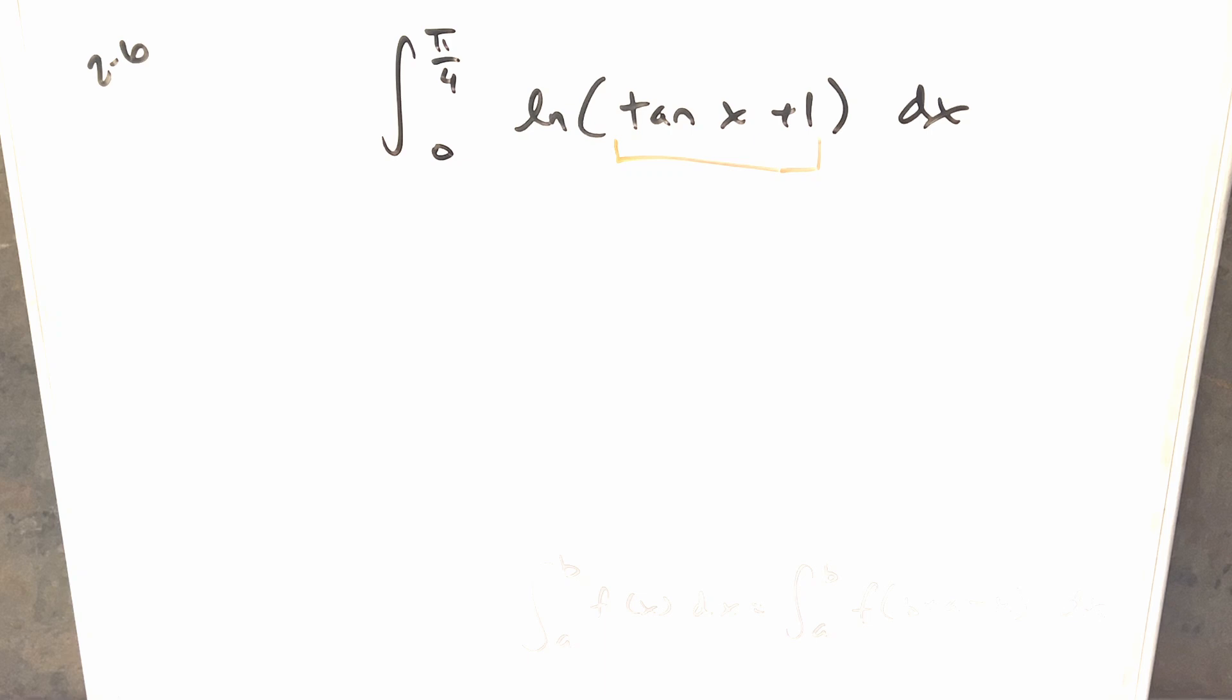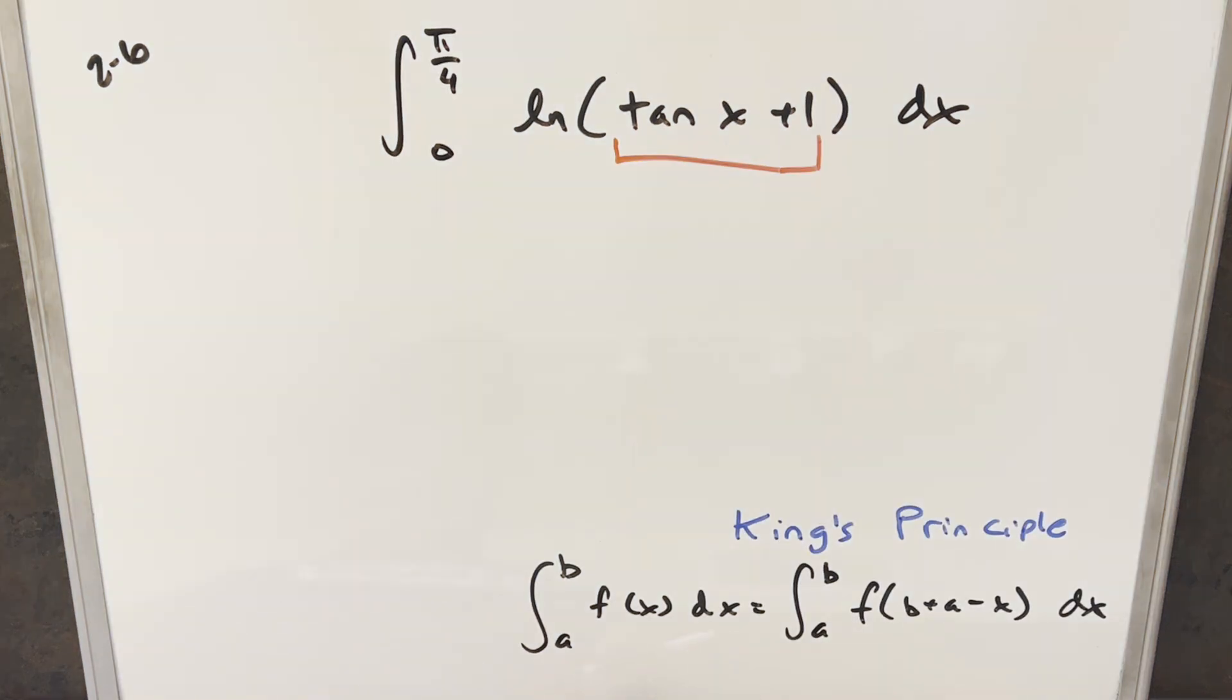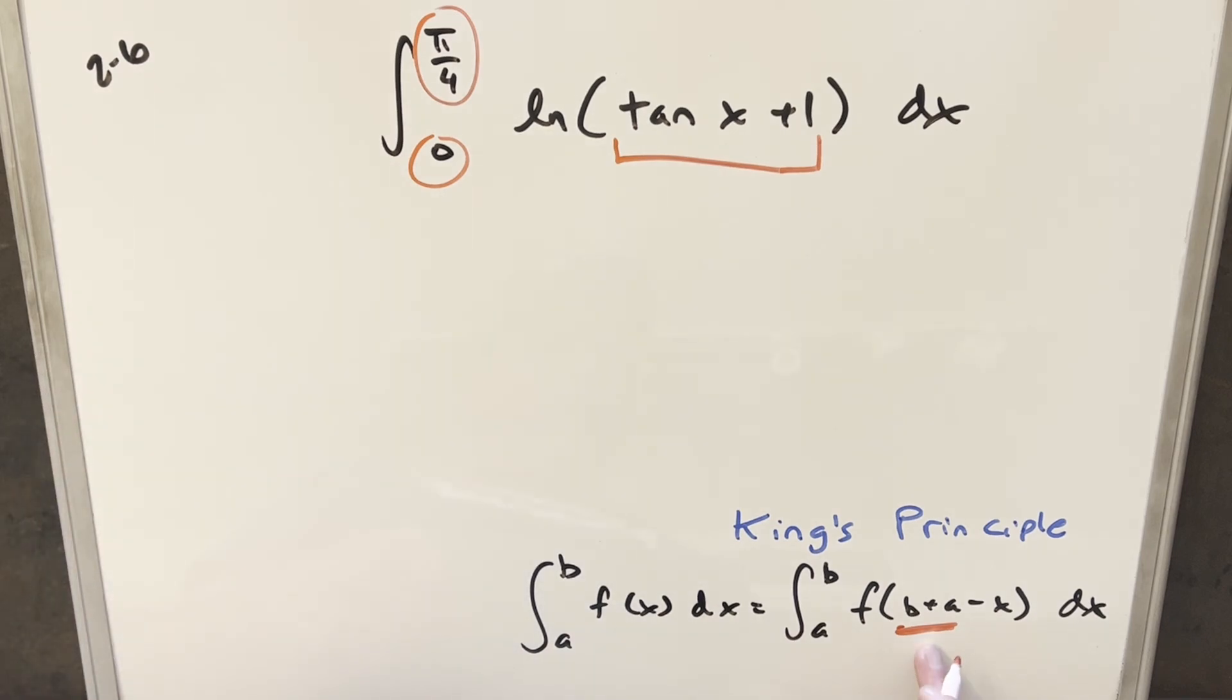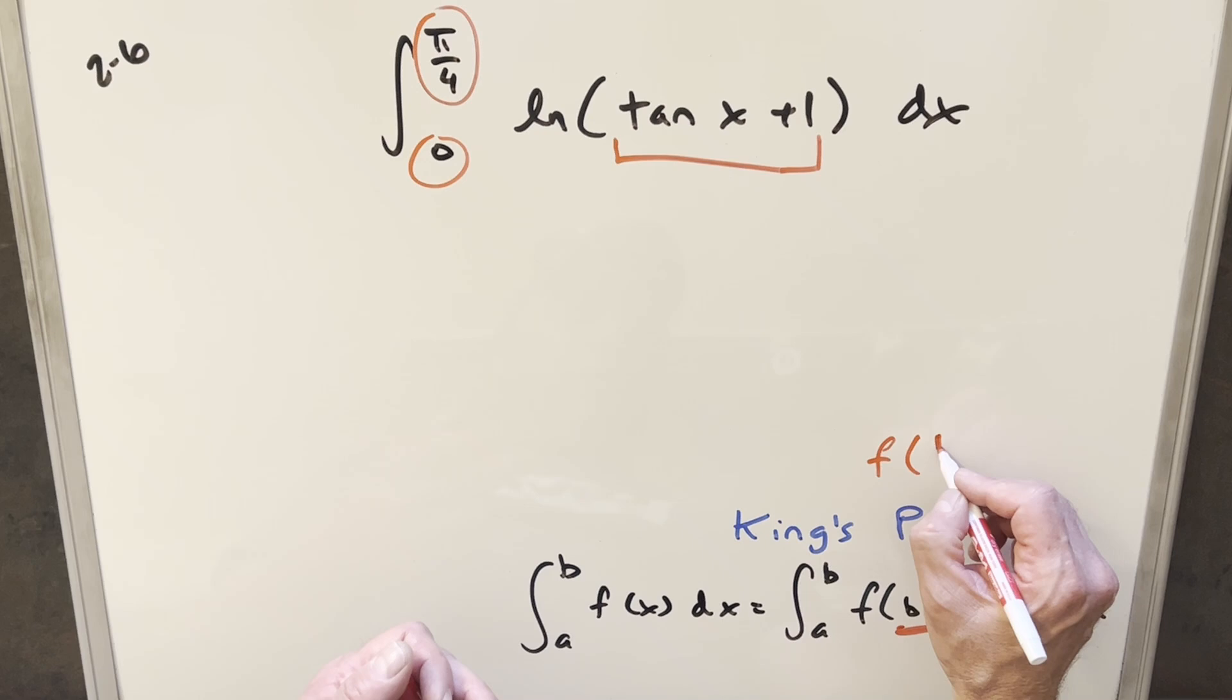I'm thinking for this, what we can do is use King's principle. We have our formula for King's principle here. And what this is going to allow us to do is take our bounds. This is going to be like our a to b value right here. And we need the b plus a. So just add in the bounds, but it's nice when the lower bounds zero. So for this value over here, we're going to have for b plus a, it's going to be just pi over four.